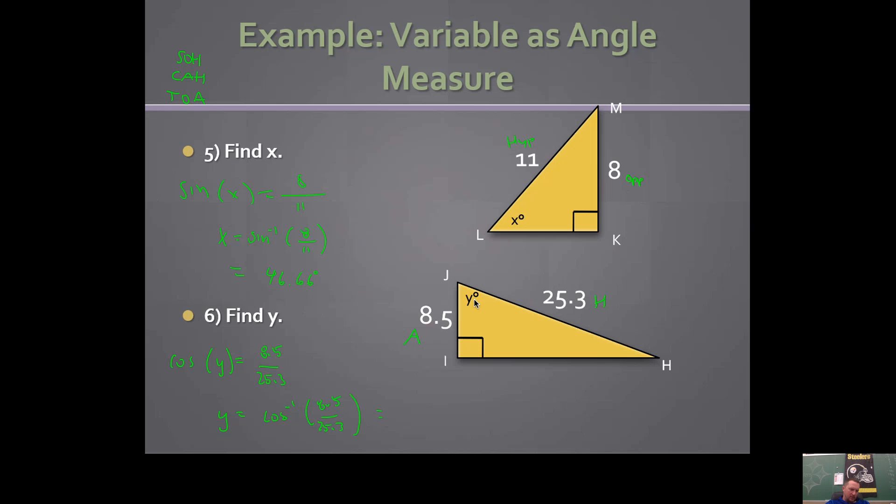Inverse cosine, 8.5 divided by 25.3. Make sure that you're typing this into your calculator or your phone or whatever you're using, and you're getting these same answers. Because if you aren't, then obviously something is going wrong. You need to make sure you know how to type it in so you get the same answer. 70.37.